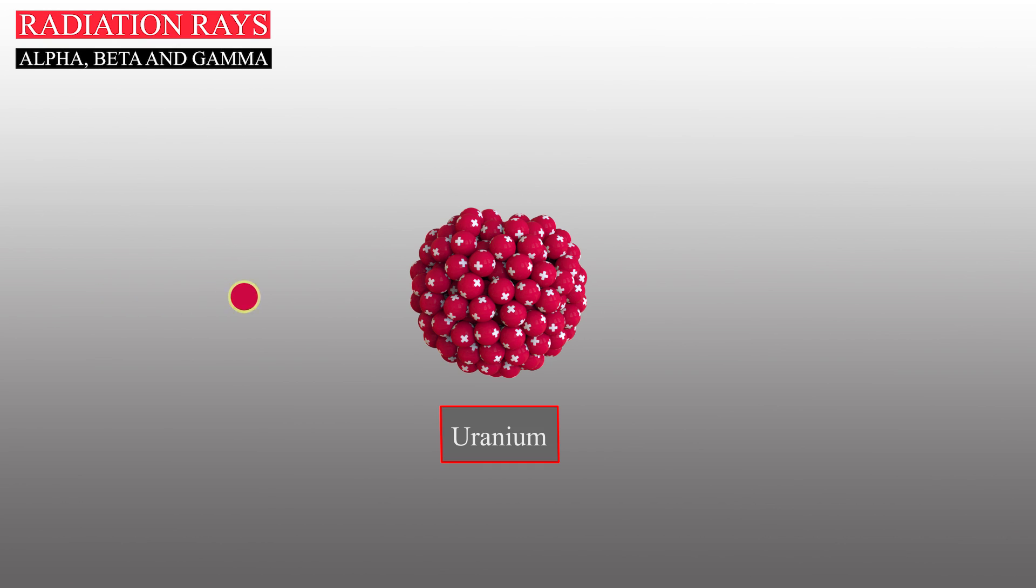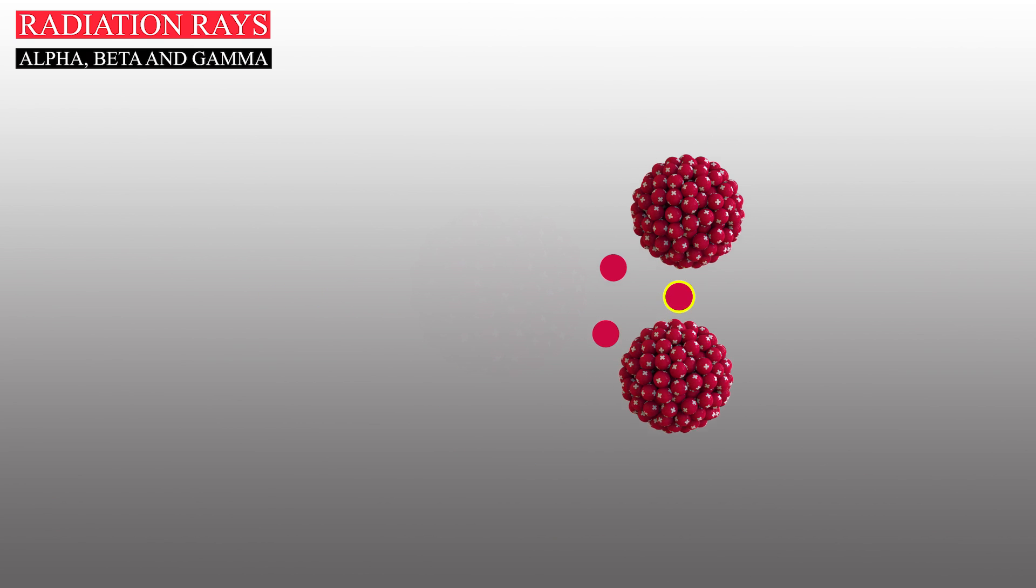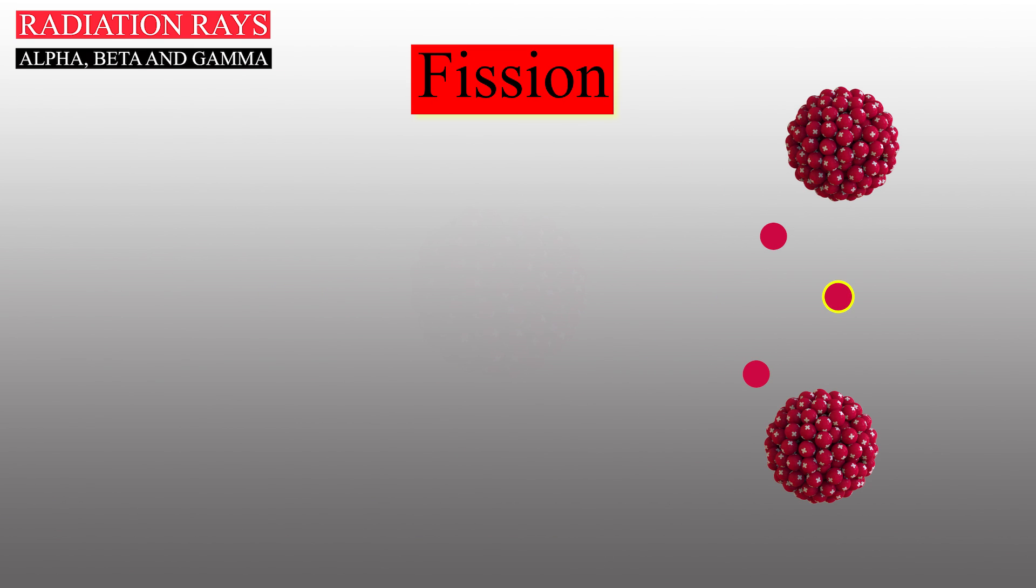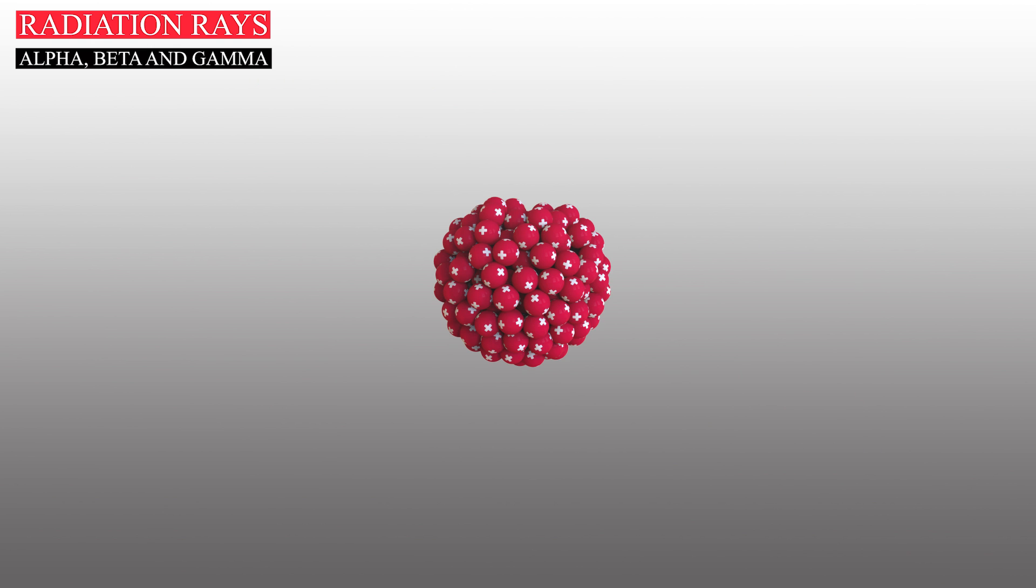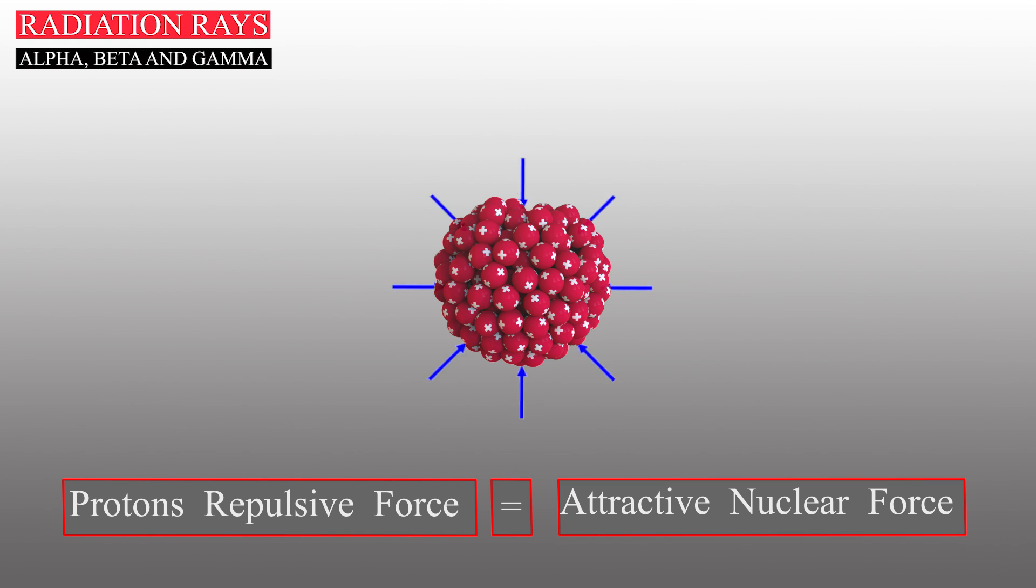When a neutron is fired at high speed into an atom of uranium, it will split the atom in a process called fission. The stability of the nucleus of an atom is maintained by the balance between the repulsive electrical force among protons and the attractive nuclear forces holding the nucleus together.